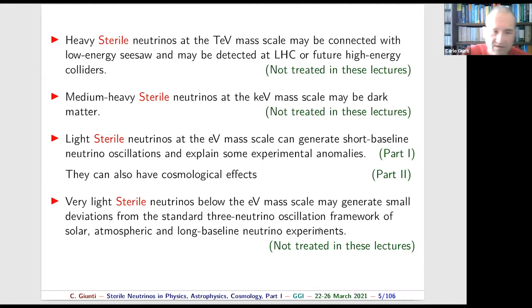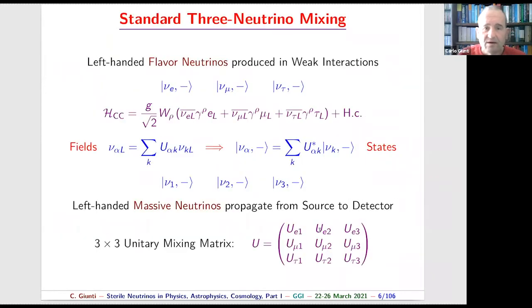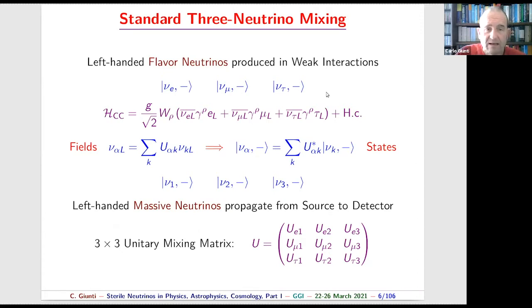To understand the effect of sterile neutrinos in oscillations, we need first to understand oscillations. I will spend the first part of this lecture explaining the physics of neutrino oscillations, starting with the standard framework of three-neutrino mixing in which there are no sterile neutrinos. Neutrino oscillation is based on the fact that the interacting flavor neutrinos — electron, muon, and tau — do not have definite mass but are mixtures of three massive neutrinos.